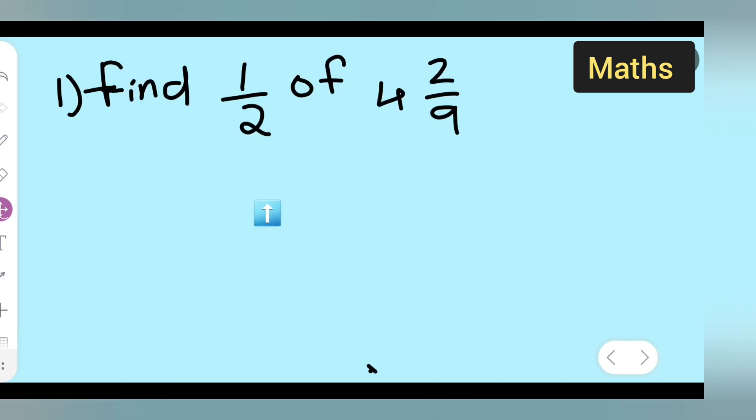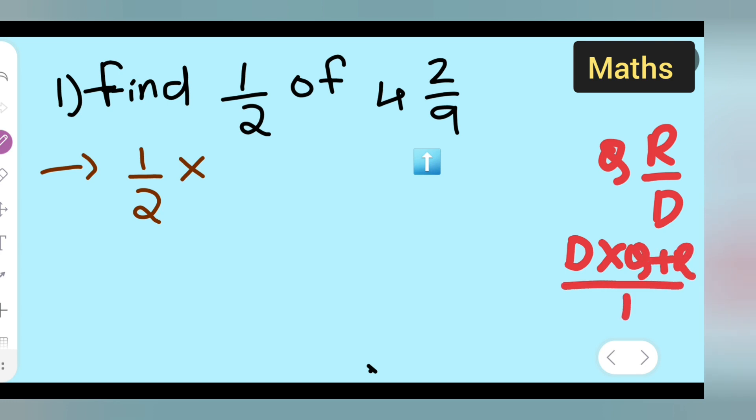So, we have to bring it into improper fractions. What you will have to do is write down 1 upon 2 as it is. Multiply this by... what you will have to do over here is basically it is in the form of quotient remainder upon denominator. So, this D you will have to multiply with Q plus R upon D.